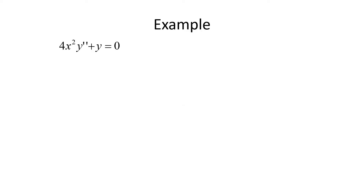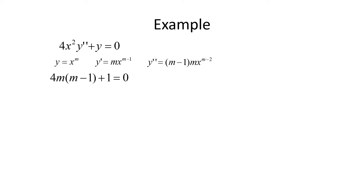For our first example, 4x²y'' + y = 0. This is a Cauchy-Euler equation because x² is paired with y'' and there's no x with y. Assuming y = x^m, the auxiliary equation is 4m(m-1) + 1 = 0, which distributes to 4m² - 4m + 1 = 0.